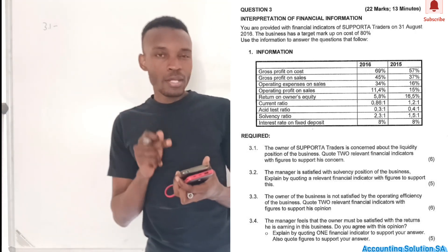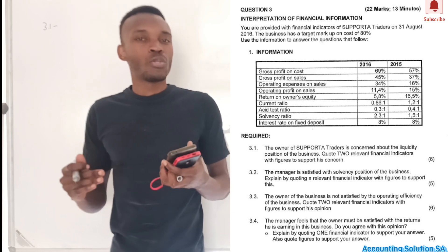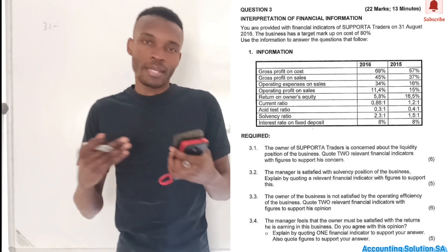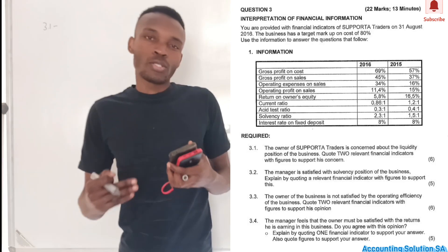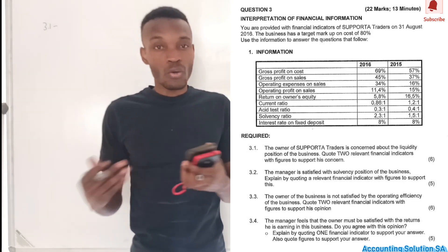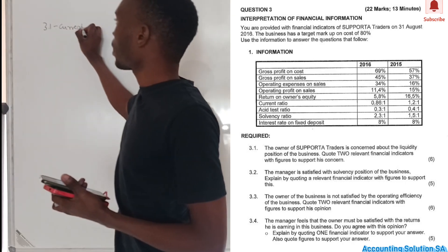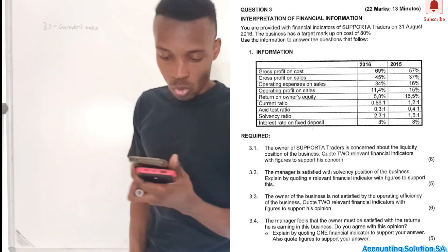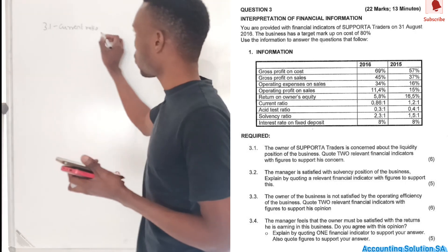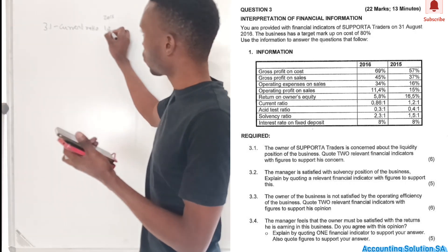The liquidity ratios we have are the current ratio and the acid test ratio. When we assess liquidity, we want to see if the company will be able to pay its short-term liabilities. These are the two ratios we are going to analyze to check whether the owner's concern is valid. Our current ratio in 2015 was 1.2 : 1.